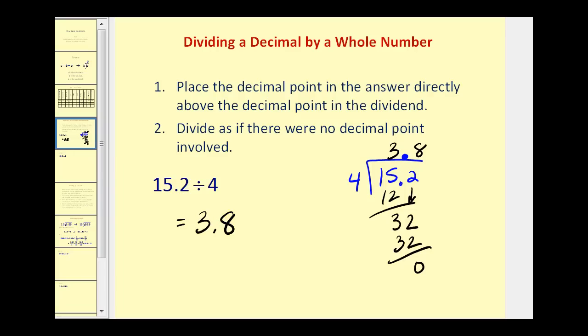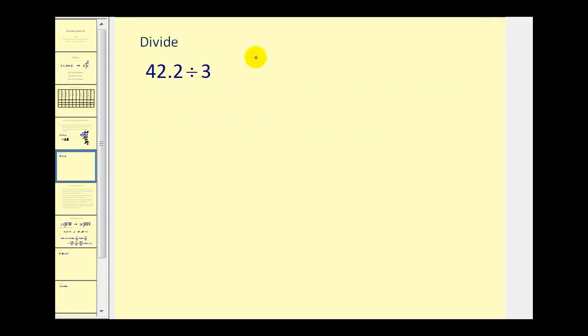Let's go ahead and take a look at one more of these. Notice we're dividing by a whole number, so we'll follow the same procedure. Move the decimal point straight up, and now divide as we normally would. So how many threes are there in 4? That would be 1. 1 times 3 is 3, and we subtract, bring down the next digit. How many threes in 12? That would be 4. 4 times 3 is 12. That would be 0. Bring down the next digit. That would be 2.